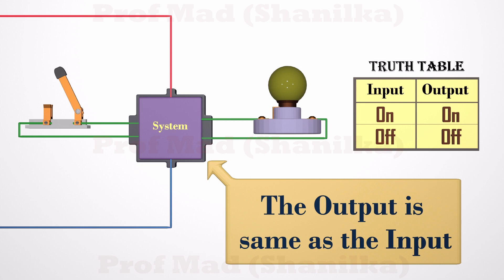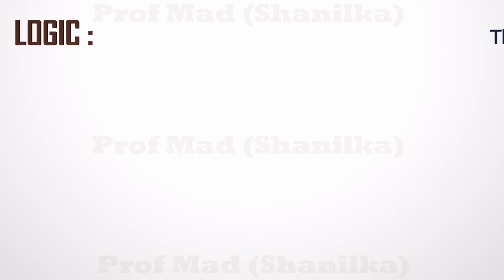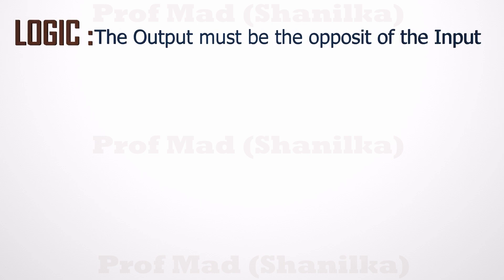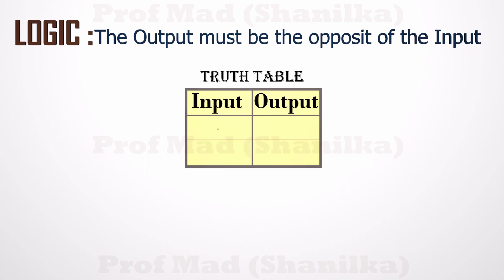But it's kind of boring. Let's try to change the output according to a logic. First, let's say we need the opposite of the input as the output. Our logic must invert the input. That means when we turn on the switch, the light must turn off, and when we turn off the switch, the light must turn on.